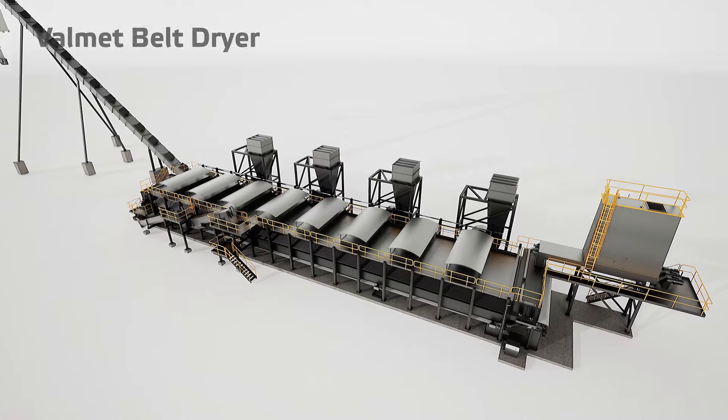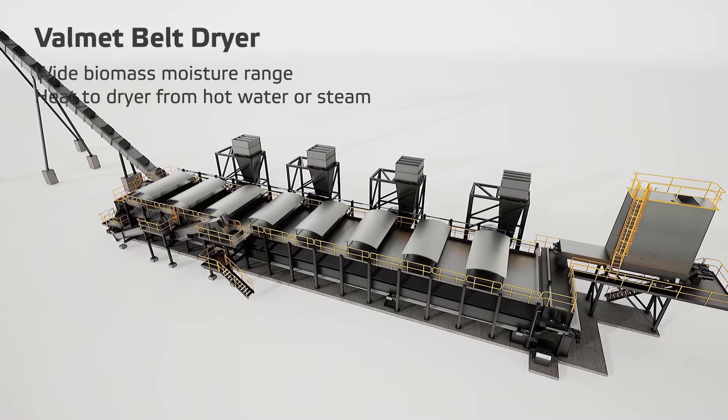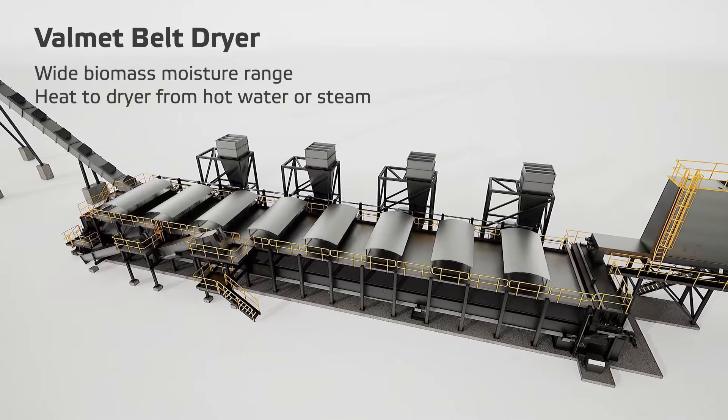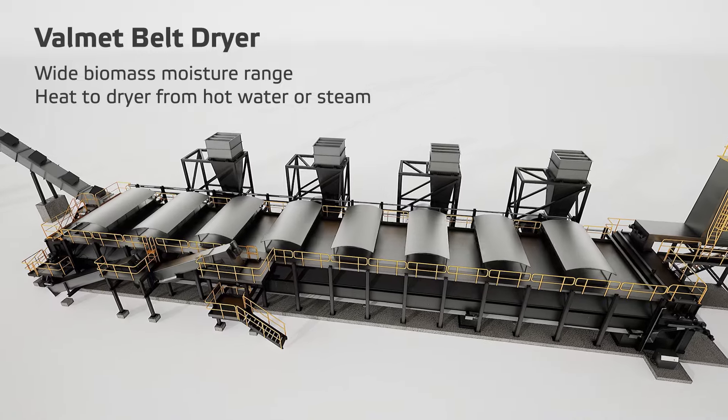Biomass used in the pyrolysis process is first dried with the Valmet belt dryer, which is an effective way to achieve high dry matter content.